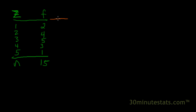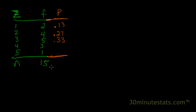We'll go ahead and calculate the proportion for each category of z. So 2 divided by 15 is 0.13. Then 4 divided by 15 is 0.27. Then 5 divided by 15 is 0.33. Then 3 divided by 15 is 0.20. And 1 divided by 15 is 0.07. If you add these up, they should add up to 1. Now we're ready to calculate our cumulative proportions.